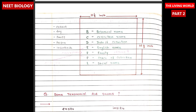The herbarium nameplate, also known as a label, provides essential information about the preserved plant specimen, typically placed on the lower right corner of the herbarium sheet. It is 11.5 inches broad and 16.5 inches long. It contains botanical name, collector name, date of collection, English name, family, place of collection, and local name.